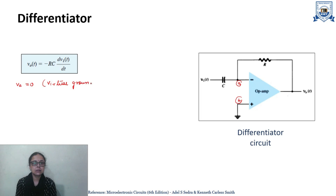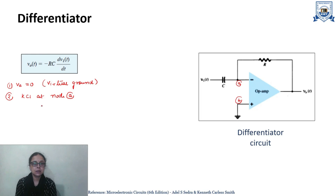Now to analyze this circuit, the second step is to apply KCL at node A, performing first S domain analysis and then time domain. For S domain, applying KCL gives: V1 minus 0 divided by Xc equals 0 minus V0 divided by R. The impedance of the capacitor Xc is 1 upon SC, so this equals minus V0 divided by R.